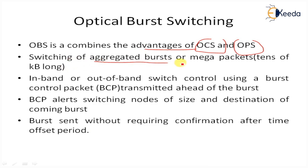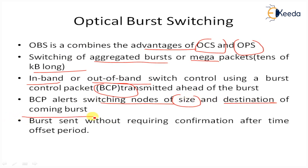OBS supports switching of aggregated bursts — also called mega packets — at higher data rates with larger bandwidth. In-band and out-of-band switch control is handled using a burst control packet (BCP). BCP processing is required to transmit ahead of the burst data. The BCP alerts the switching node of the size and destination of the incoming burst on the incoming port. Bursts are sent without requiring confirmation after the offset time period, which eliminates the need for optical buffering. Switching is required in the microsecond range.